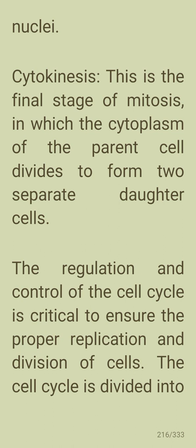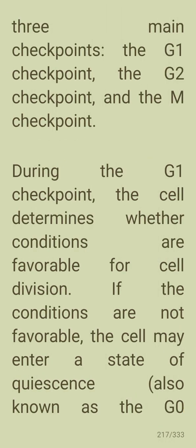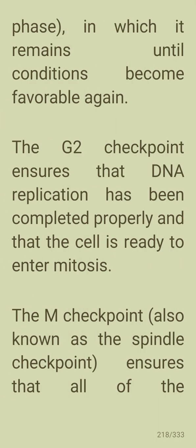Cytokinesis is the final stage of mitosis, in which the cytoplasm of the parent cell divides to form two separate daughter cells. The regulation of the cell cycle is critical to ensure proper replication and division. The cell cycle has three main checkpoints: the G1 checkpoint, the G2 checkpoint, and the M checkpoint. During the G1 checkpoint, the cell determines whether conditions are favorable for division; if not, the cell may enter a resting state known as the G0 phase. The G2 checkpoint ensures that DNA replication has been completed properly.